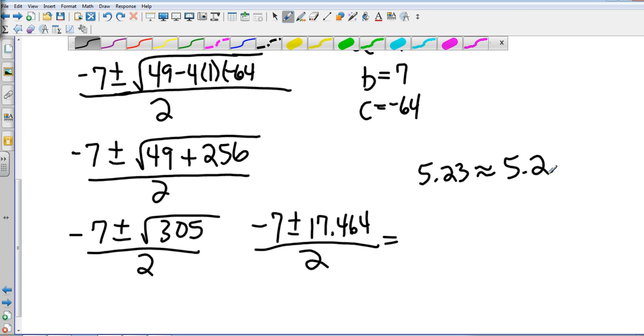Then my second one is negative 7 minus 17.464, divide that by 2, and I get negative 12.23, which is approximately negative 12.2.